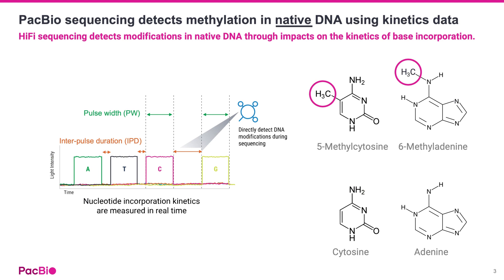Native base modification detection is possible with SMRT sequencing due to the raw sequencing kinetics. Base modifications alter the pulse width and interpulse duration of incorporated bases, allowing for secondary analysis to associate kinetic signatures with specific modifications like 5mC and 6mA.